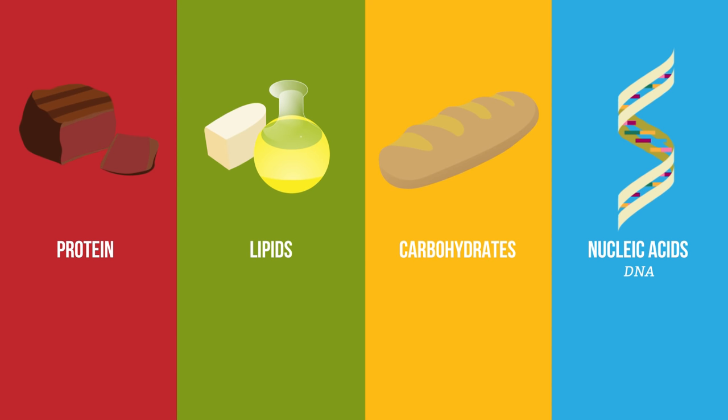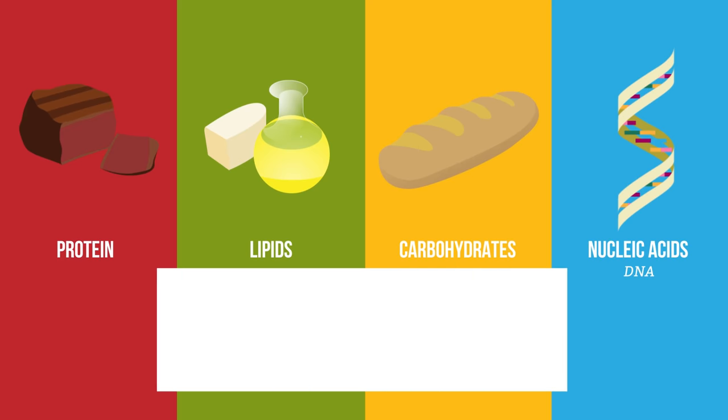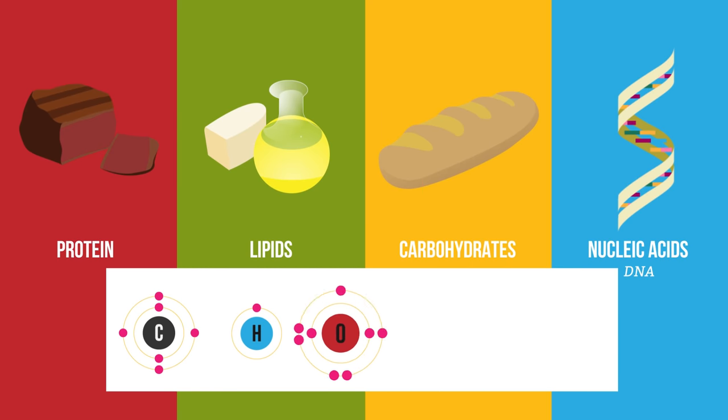Proteins are a little more complex, with four or five elements: carbon, hydrogen, oxygen, nitrogen and sometimes sulfur.